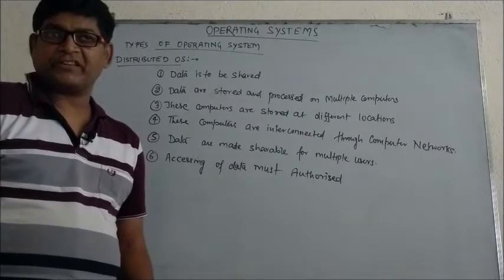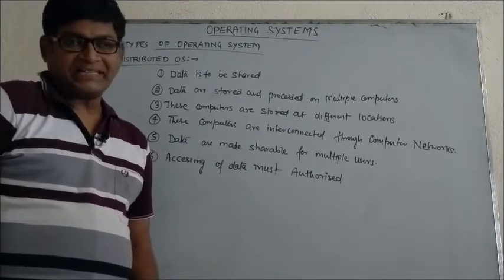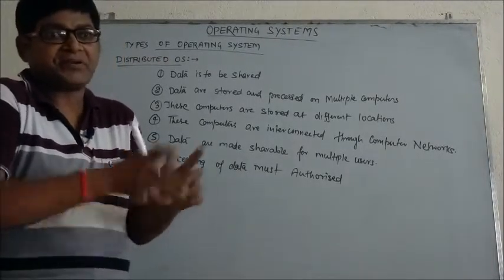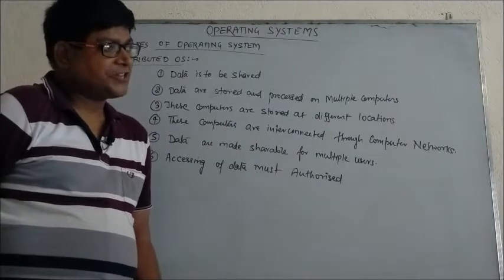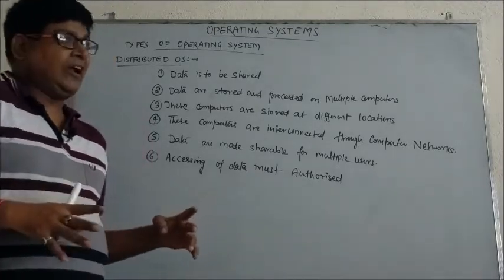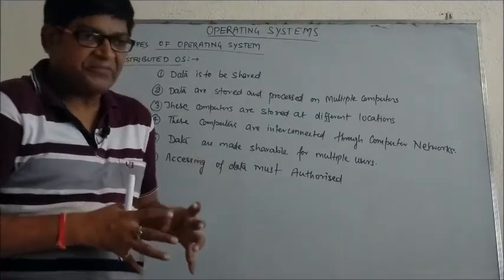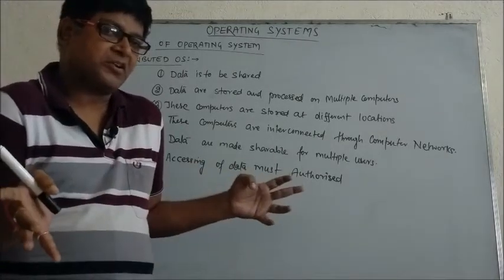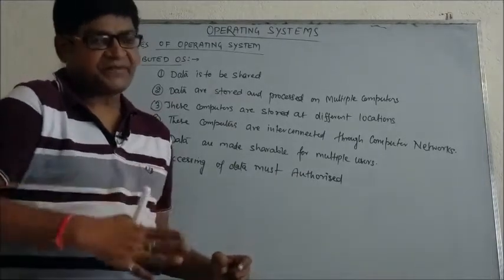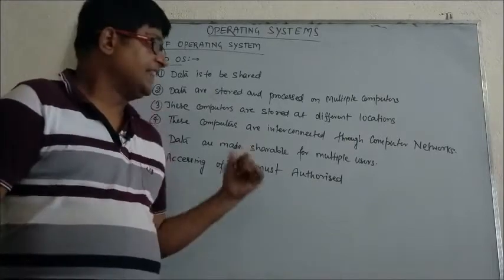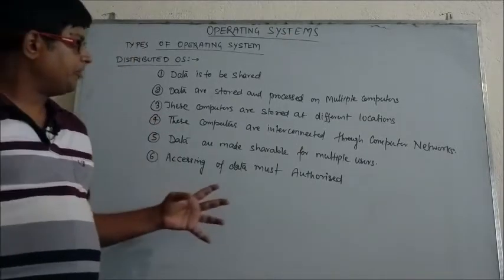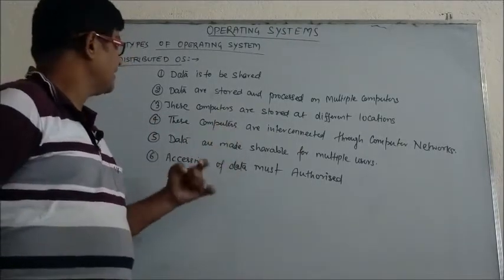The next important operating system is the distributed operating system. This operating system is needed when we want to share data among multiple users. It is not about distributing data to various locations because of chunk on one system — rather, data must be shared to multiple users. That is why this type of operating system came into picture.